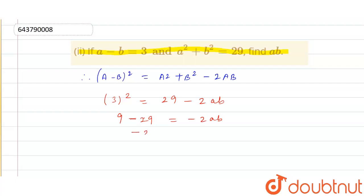So this was equals to minus of 20 is equal to minus of 2ab. This minus and minus cancels and this 2 cancels 20 with 10. So the final value of ab is equal to 10.